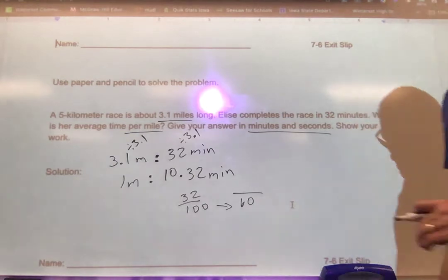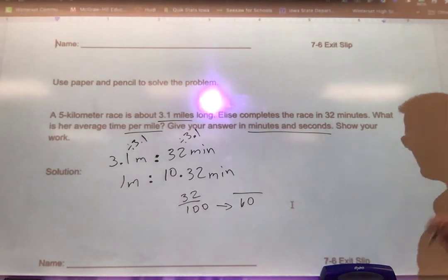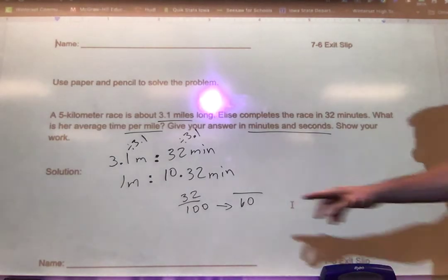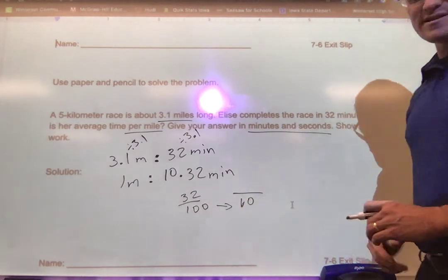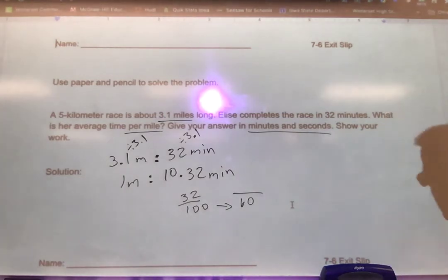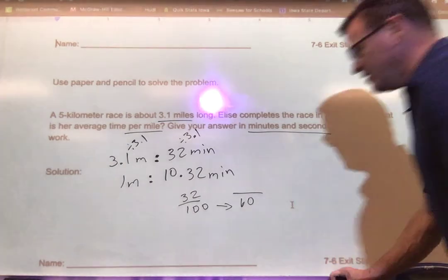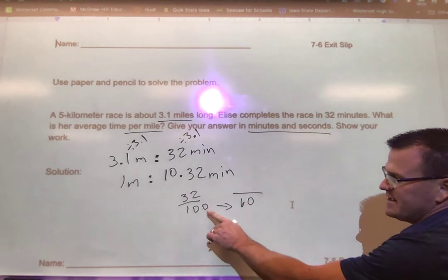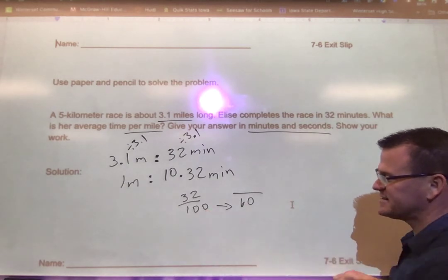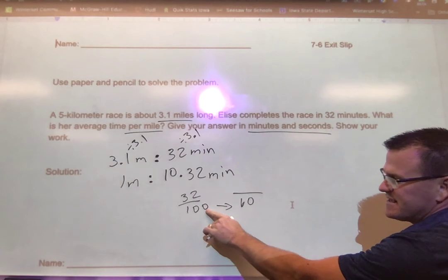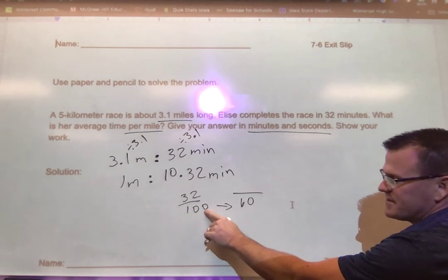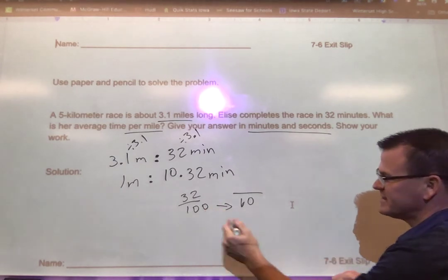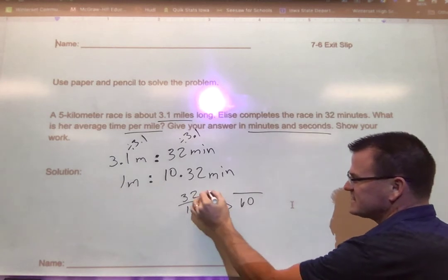I want to know what that is out of 60 seconds. We know 100 and 60 don't get along very well, so we've got to somehow convert it. There are easier ways sometimes to get numbers that get along. One step that always works pretty easily: if I take this times 6 to get it to 600, because if I can get it to 600 I can get that to 60. So I'm going to take this times 6, so I must take the top times 6.